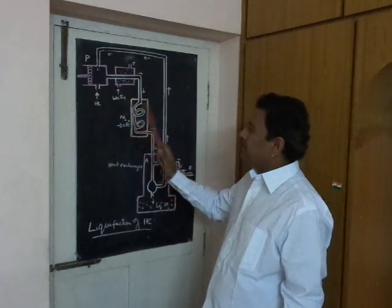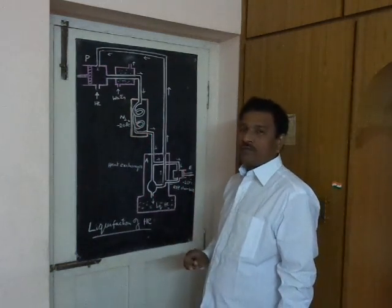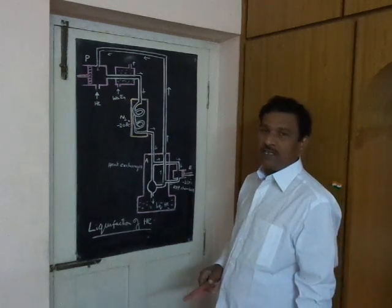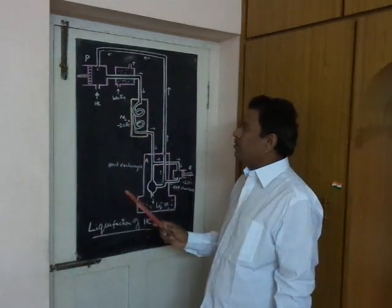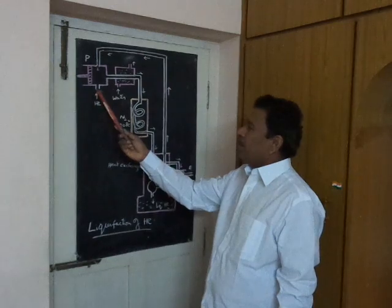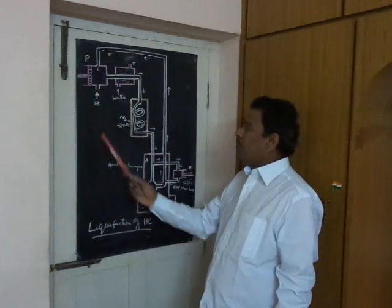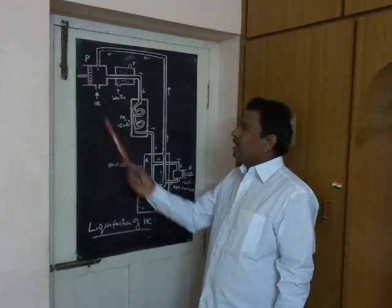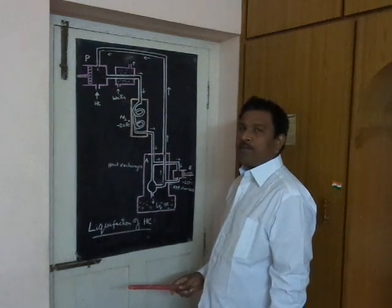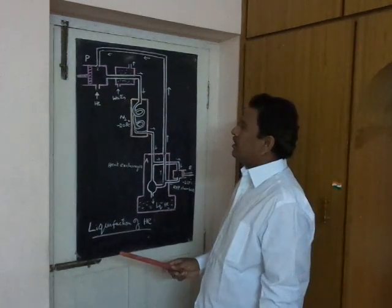Initially, pure and dry helium gas is introduced into the compressor P. The gas is compressed to a high pressure of about 30 atm.